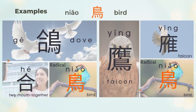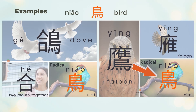鸽 means dove. 鸽 is the left part 合 (together) and the right part 鸟 (bird). Together, birds are peaceful doves. 鹰 means falcon or eagle. The upper outside part 隹 (yīn) is a falcon, and in modern usage we add 鸟 (bird) with 隹.